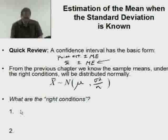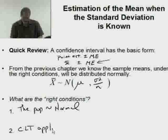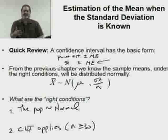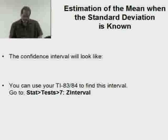What are the right conditions? Number one: the population is distributed normal—if we know that, we're good to go. Or number two: the CLT applies, which means we have an n of at least 30. It's either one of these. It's one or the other. It's not like proportions where there were three things you needed.